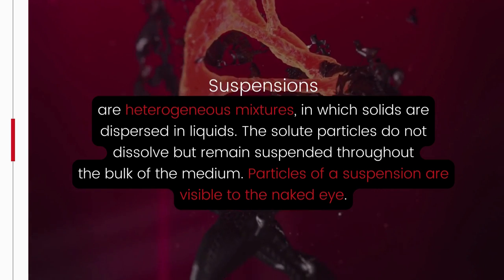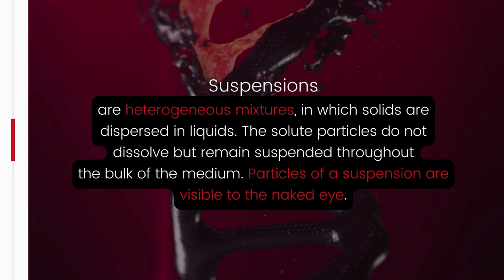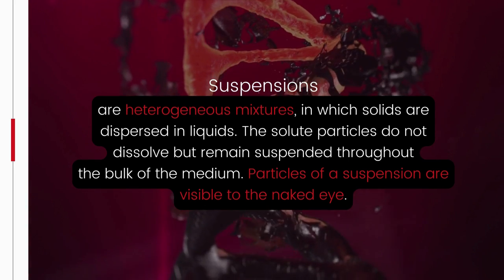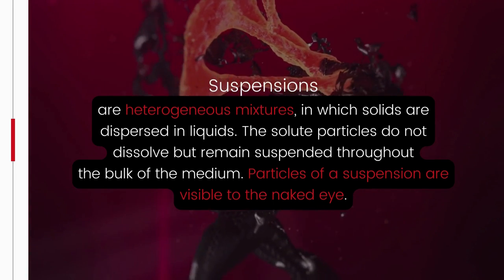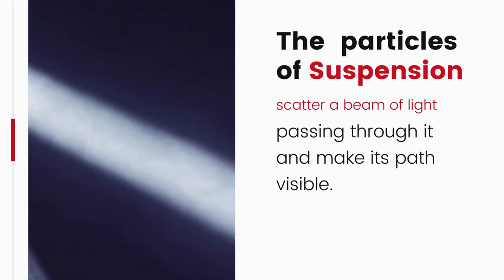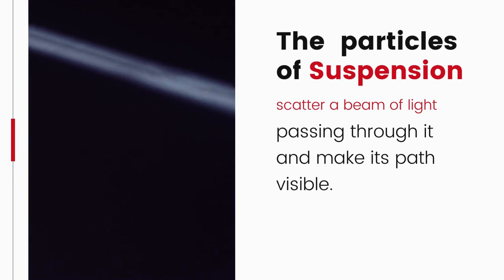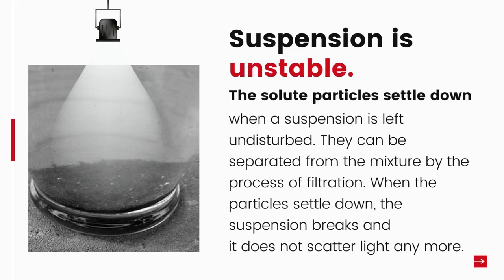Particles of a suspension are visible to the naked eye. Since the particles are big enough, they scatter a beam of light passing through and make its path visible. The solute particles settle down when the suspension is left undisturbed — that is, a suspension is unstable. They can be separated from the mixture by filtration. When the particles settle down, the suspension breaks and the particles no longer scatter light.